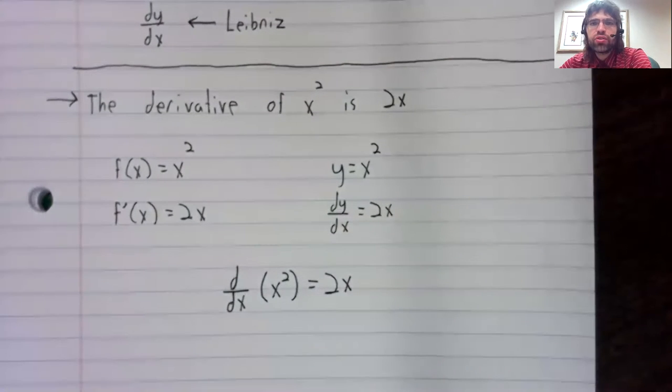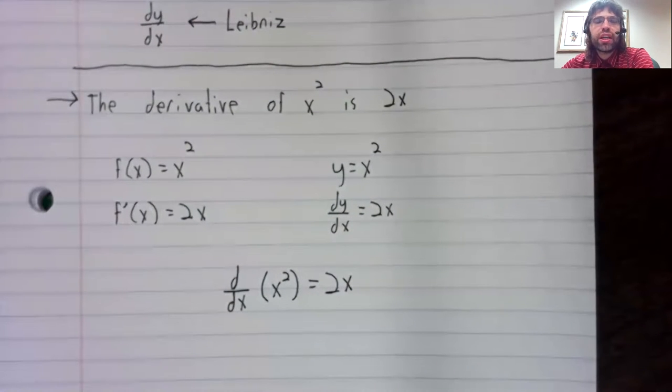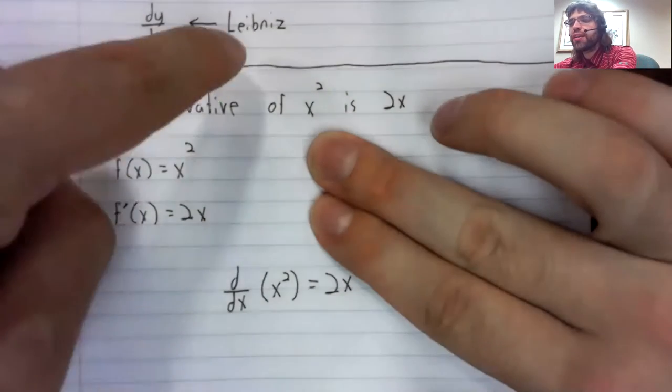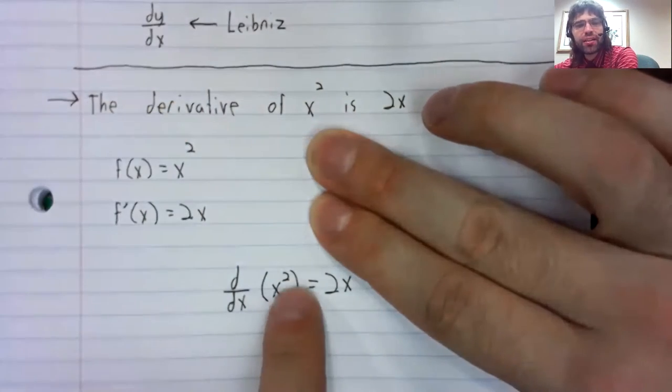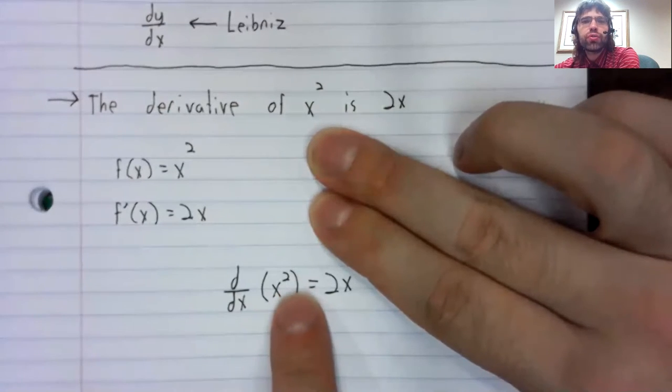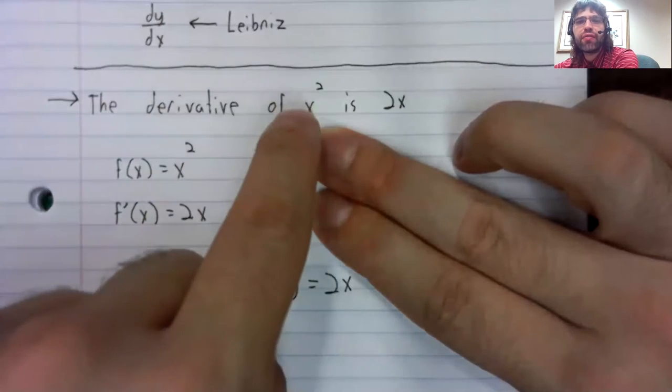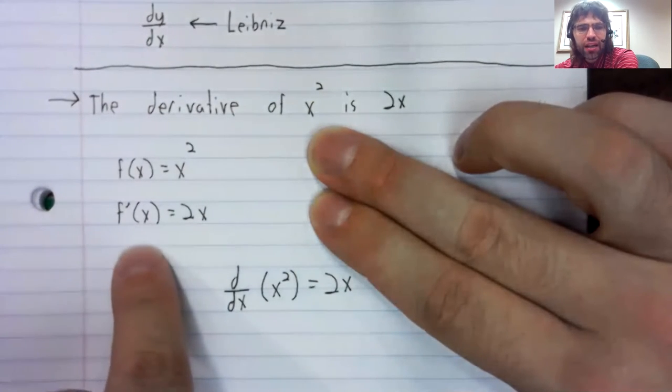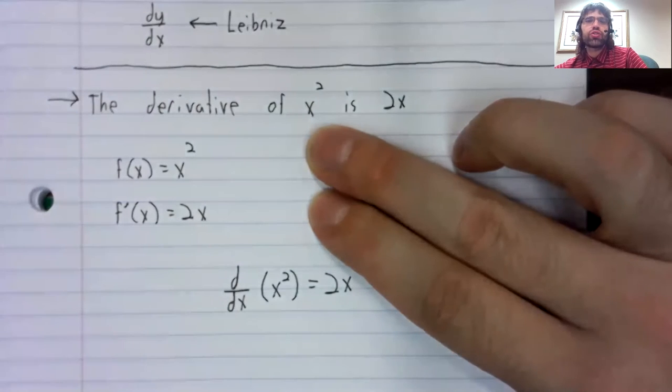And there's the statement that the derivative of x squared is 2x. And I was able to write this directly using the Leibniz notation. Whereas to use the Lagrange notation, I first have to give this a name, and then I can use the Lagrange notation.